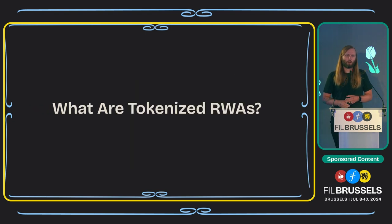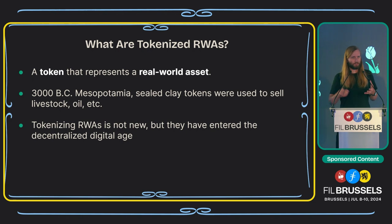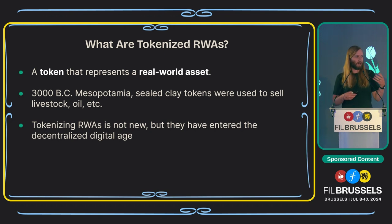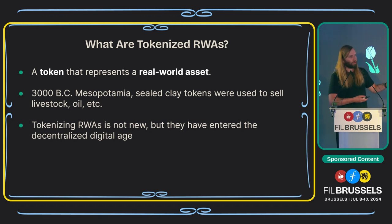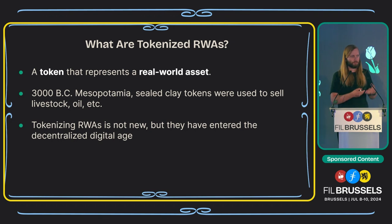So first, what are tokenized RWAs? In a lot of conversations it's treated like a new thing, but it's really basic — a tokenized RWA is a token that represents a real-world asset. This is not new for humans. In 3000 BC Mesopotamia, we used sealed clay with tokens inside that we would take to a market, where you would sell livestock or oil. The different sizes of tokens and the seal of the clay validated the asset class, because you don't want to take your 300 cattle into town to sell them.